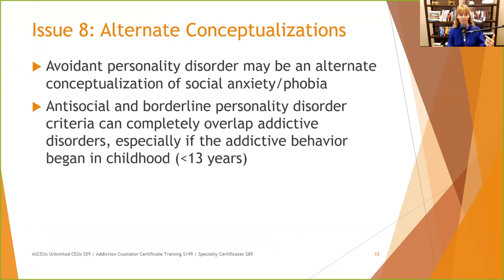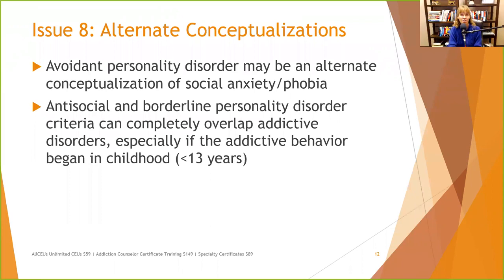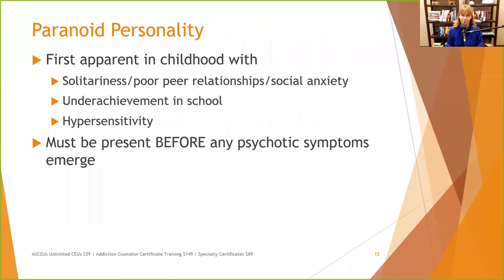Issue eight: alternate conceptualizations. The DSM-5 noted that avoidant personality disorder may just be an alternate conceptualization of social anxiety and phobia — when you look at how to differentially diagnose the two, they're pretty much the same thing. Antisocial and borderline personality disorder criteria can also completely overlap addictive disorders, especially if the addictive behavior began in childhood — under age 13 — since antisocial personality disorder requires the presence of conduct disorder, much of which occurs before age 13.